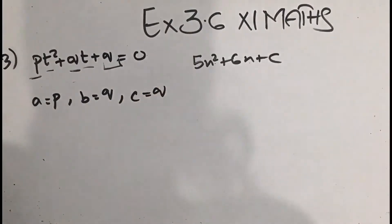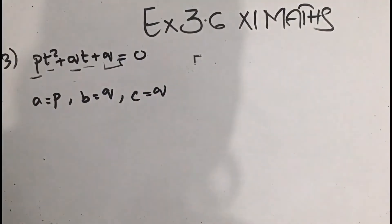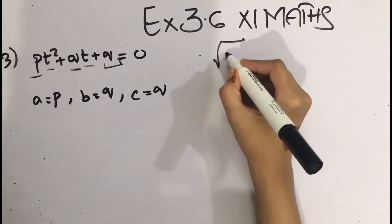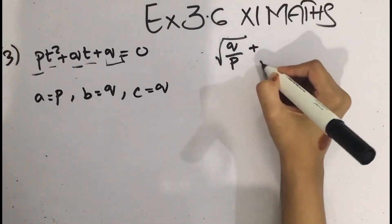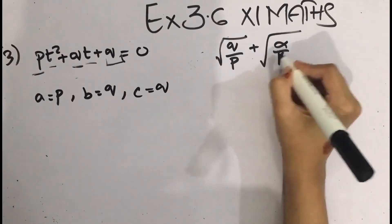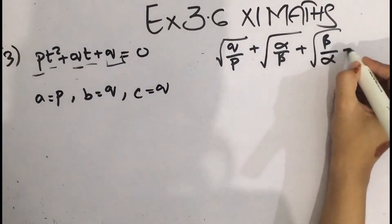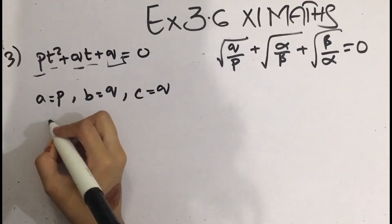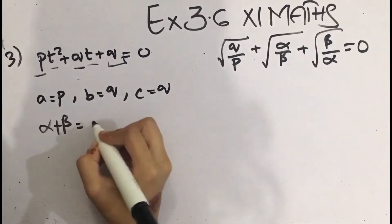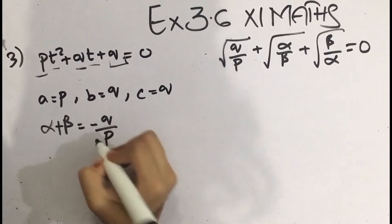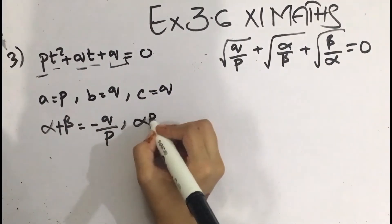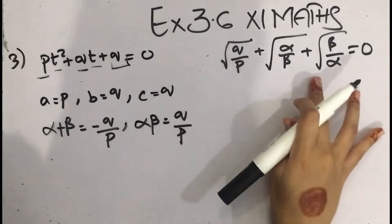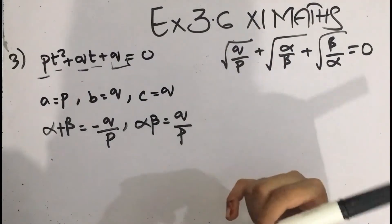We have to prove: √(q/p) + √(α/β) + √(β/α) = 0. First of all, we will find the sum and product of the roots. We have alpha plus beta equals minus b upon a, which gives minus q by p. And alpha times beta equals c upon a, which gives q divided by p.